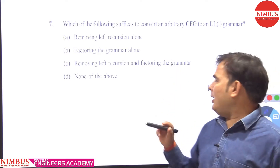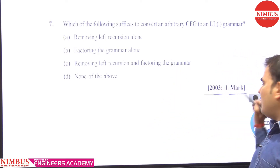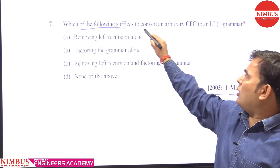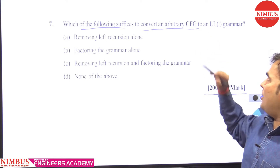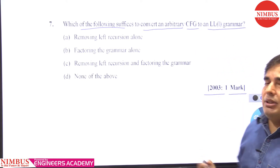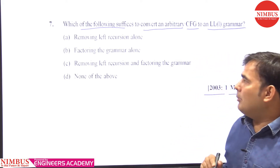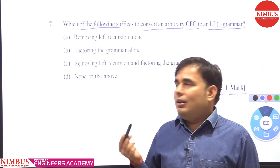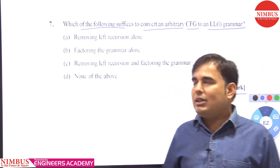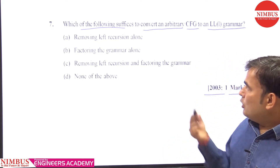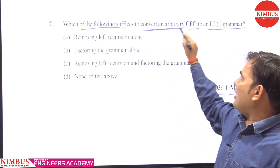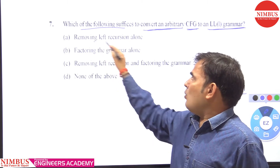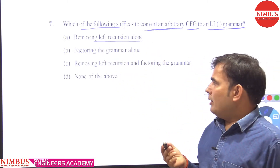This question was asked in GATE 2003 for one mark. It is asking which of the following suffices to convert an arbitrary context-free grammar (CFG) to an LL(1) grammar. As we know, the problems of the top-down parser are left recursion and left factoring. Option A says: removing left recursion alone.